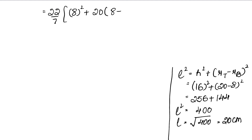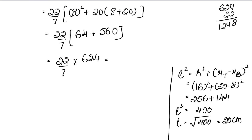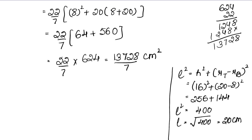TSA = 22/7 × [8² + 20 × (8 + 20)] = 22/7 × [64 + 20 × 28]। 20 × 28 = 560। तो 22/7 × [64 + 560] = 22/7 × 624। 22 × 624 = 13728 upon 7 cm² आ गया। यही हमारा total surface area है — 13728/7 cm²।